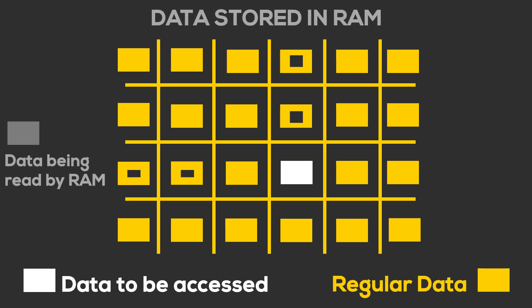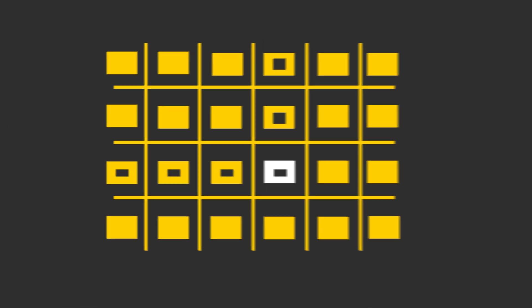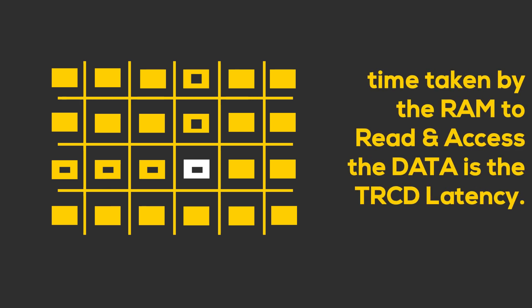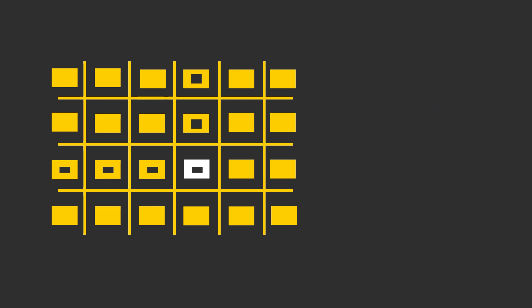The next number is TRCD — Row Address to Column Address Delay. RAM is set up kind of like an Excel sheet. TRCD is basically the delay between accessing a row and then getting to the specific column where your data is located.